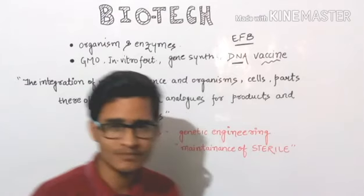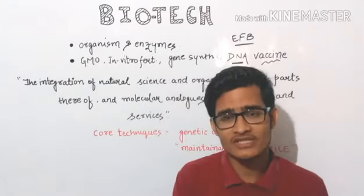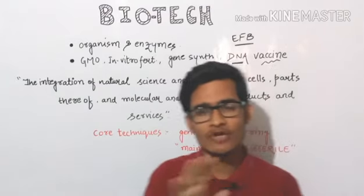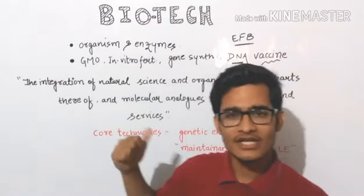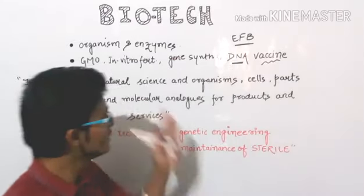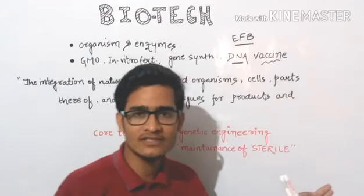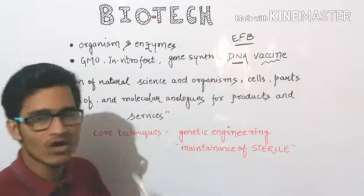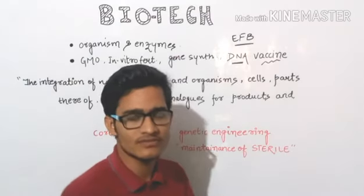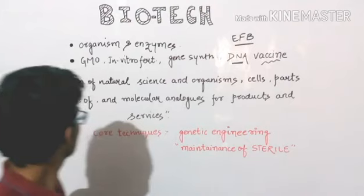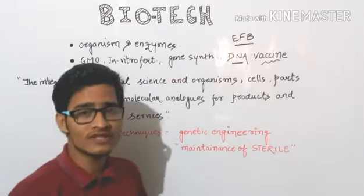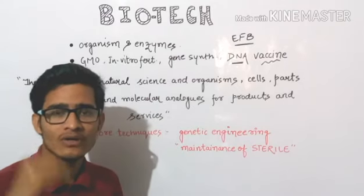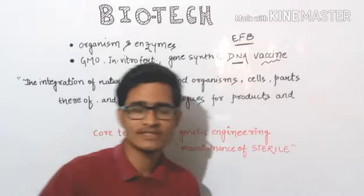Listen carefully and remember it in this sequence — do not manipulate the order on your own. The definition states: it is the integration of natural sciences and organisms, cells, parts thereof, and molecular analogues for products and services. Repeat: integration of natural sciences — organisms, cells, parts thereof, and molecular analogues — for products and services.